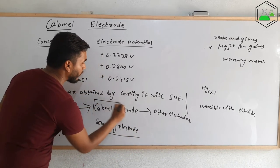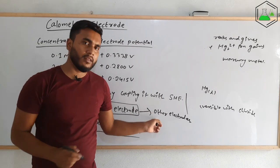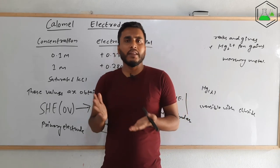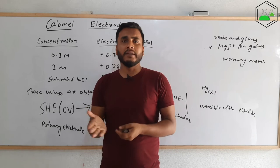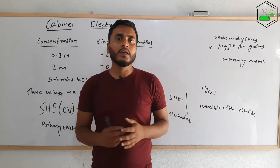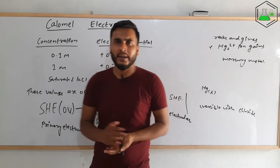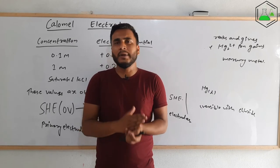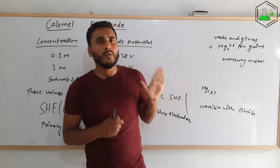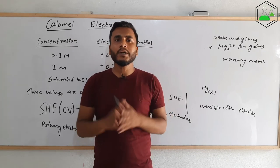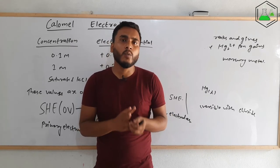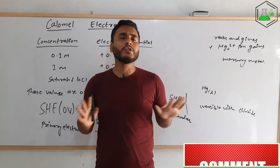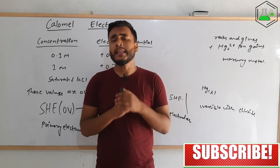Nowadays we prefer the calomel electrode for calculating the electrode potential of other electrodes because the standard hydrogen electrode has many limitations. The calomel electrode is very small in size and portable — you can even carry it in your pocket. However, mercury metal used in it is hazardous, so alternatives are being explored. In this video, we understood what the calomel electrode is, its construction and working, its reactions, and why it is preferred over the standard hydrogen electrode. Thank you for watching.